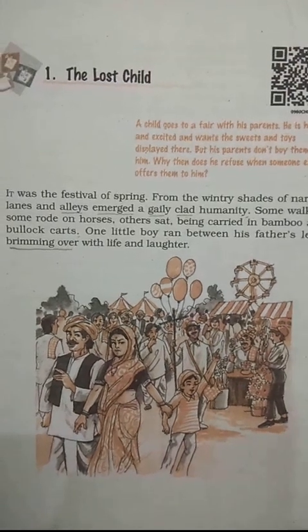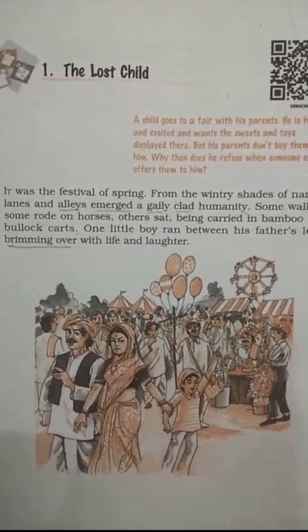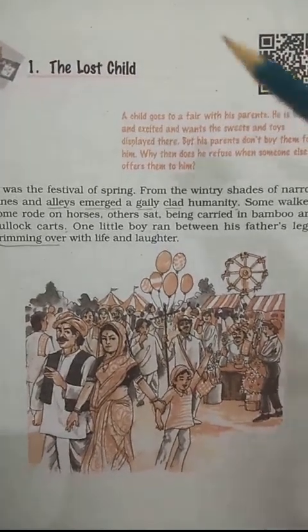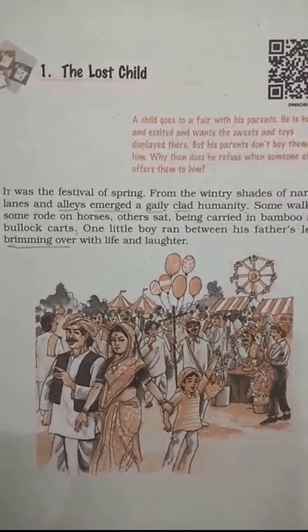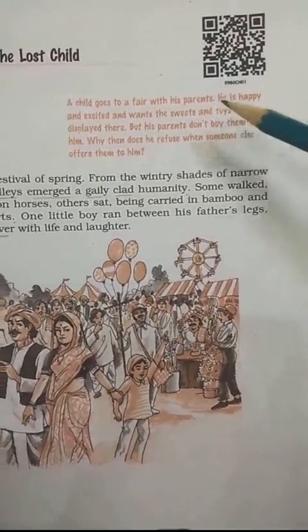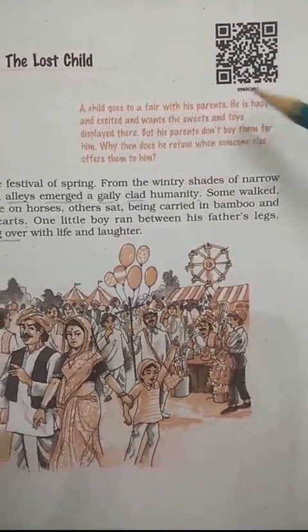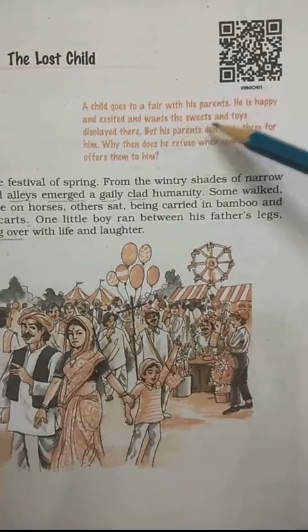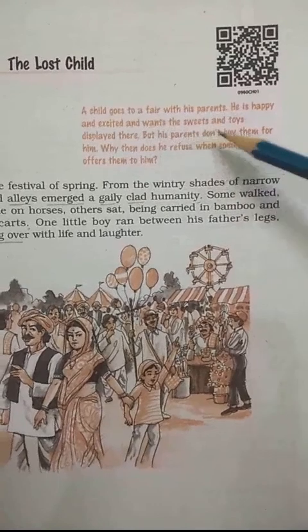Welcome back to your English class. Today we will begin with our first chapter of the supplementary reader 'Moments,' titled 'The Lost Child,' written by Mulk Raj Anand. As the title itself tells us, the story is about a child who gets lost. In the beginning of the story, a child goes to a fair with his parents. He is happy and excited and wants the sweets and toys displayed there, but his parents don't buy them for him.